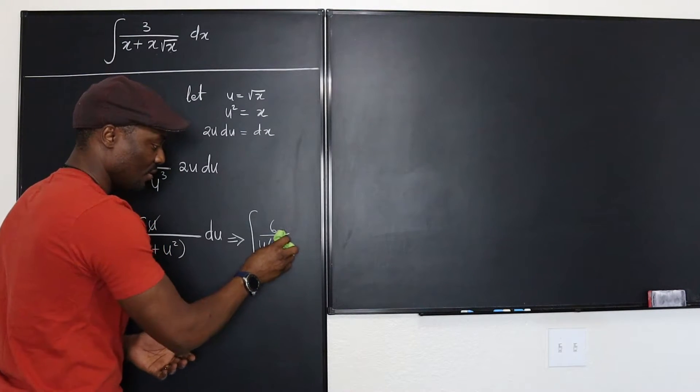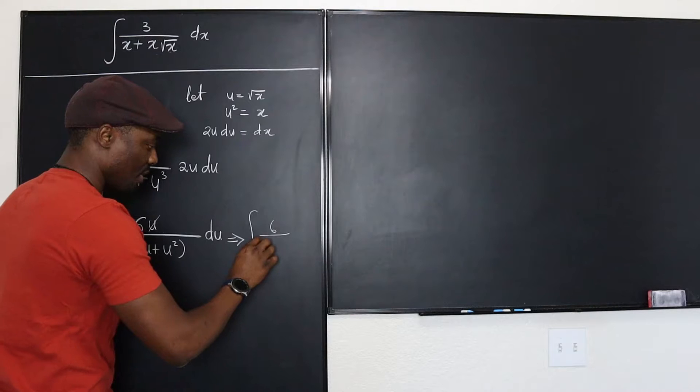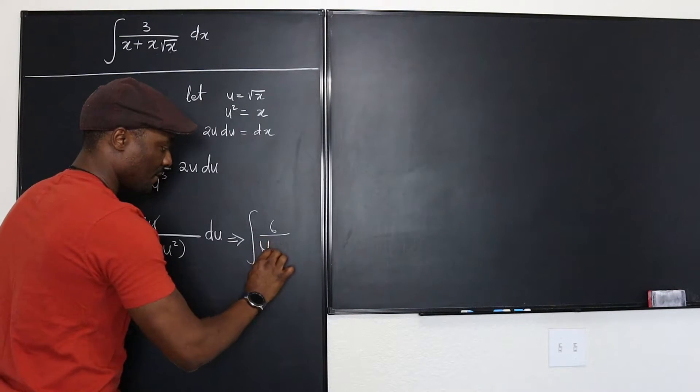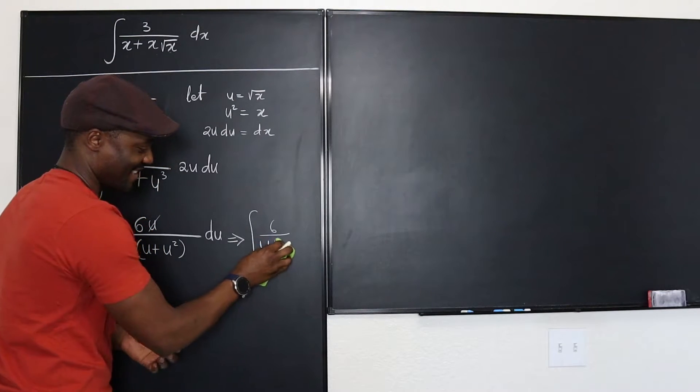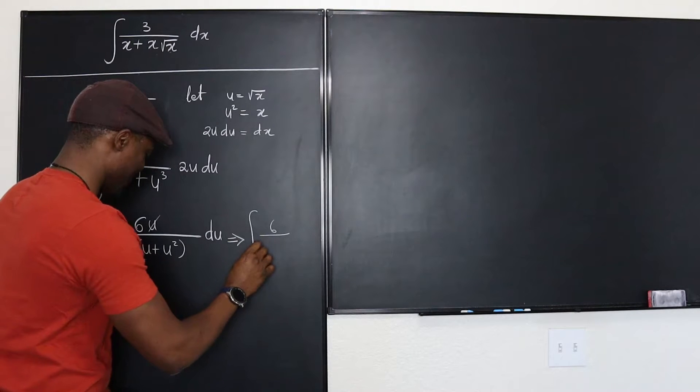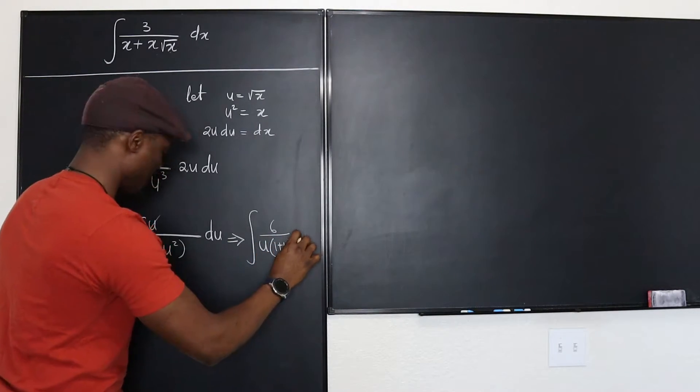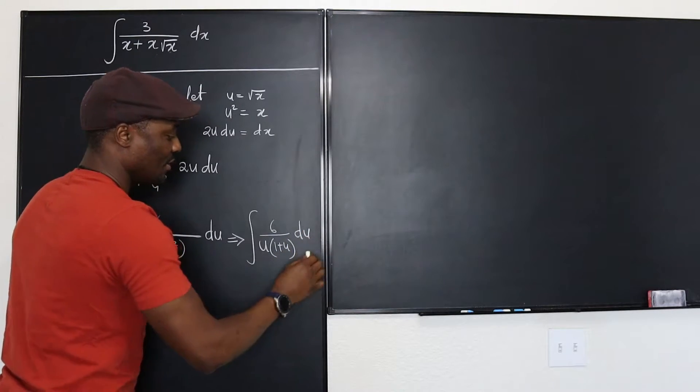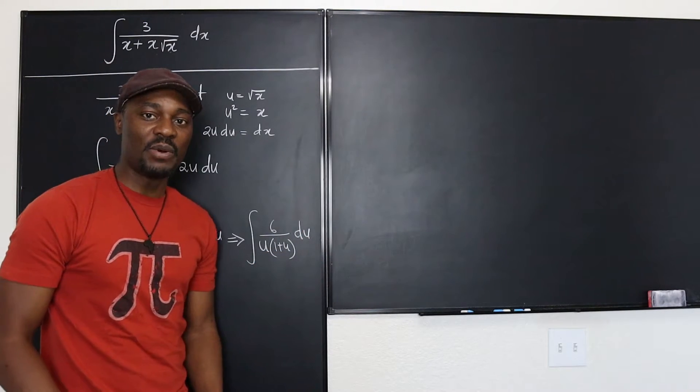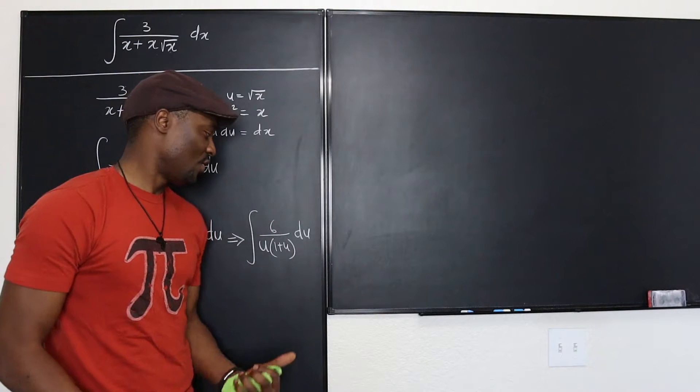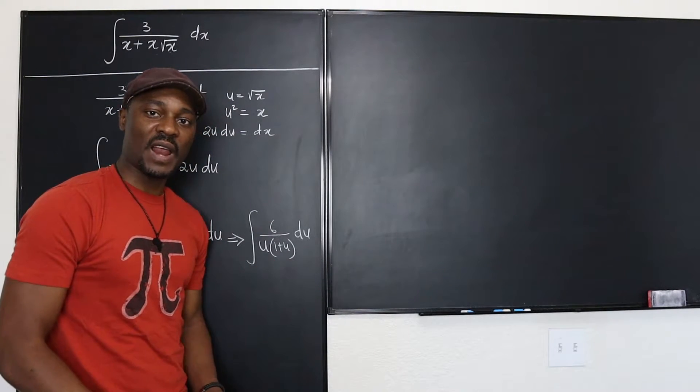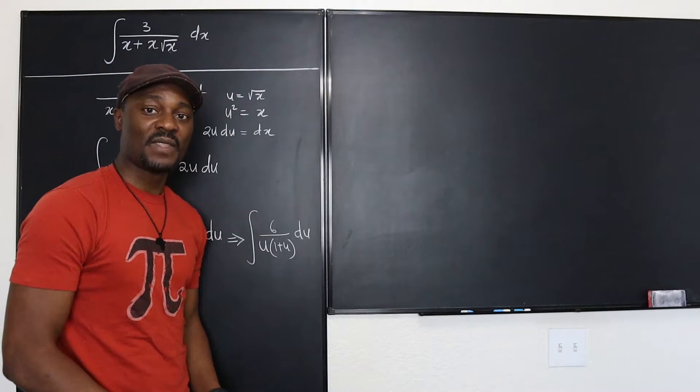Or 1 plus u, so we follow the order. That's going to be u into 1 plus u, then you have du. Now this is easy for anybody to integrate. You just need to resolve this into partial fractions because that's the only way out and we'll be good.